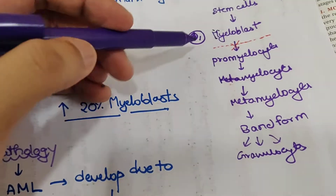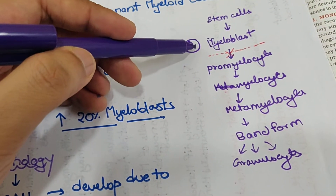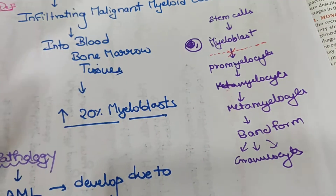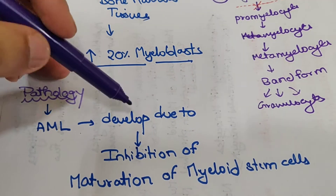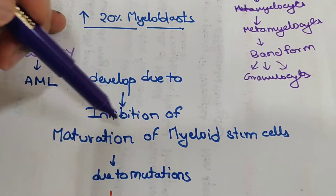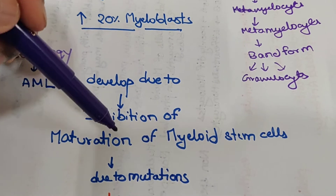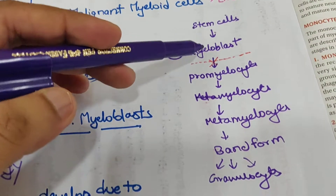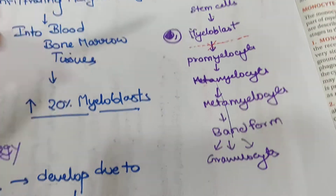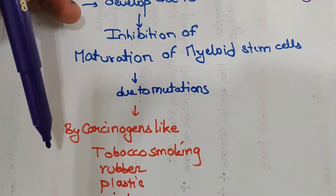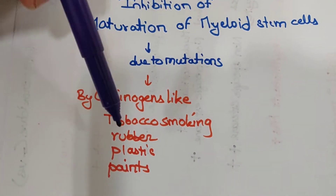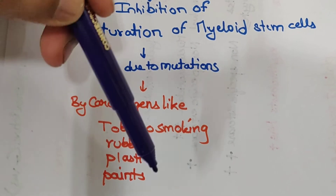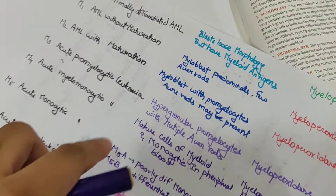In pathology, AML develops due to inhibition of maturation of myeloid stem cells — that is, myeloid stem cell maturation is blocked due to mutations. These mutations are caused by carcinogens like tobacco smoke, rubber, plastic, paints, and other carcinogens.